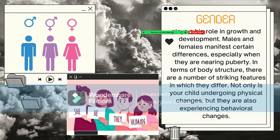The third factor is gender. Gender plays a big role in growth and development. Males and females manifest certain differences, especially when nearing puberty, in terms of body structures. Not only are children undergoing physical change, but they are also experiencing behavioral changes. In short, gender refers to the characteristics of women, men, girls, or boys that are socially constructed.